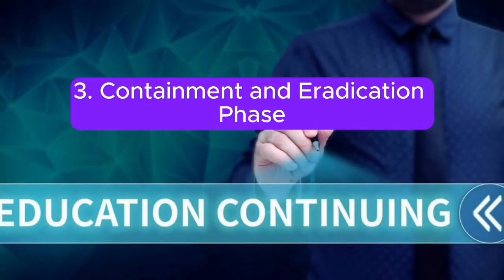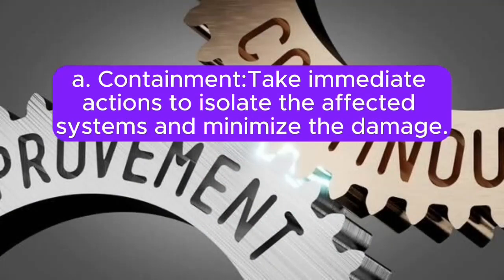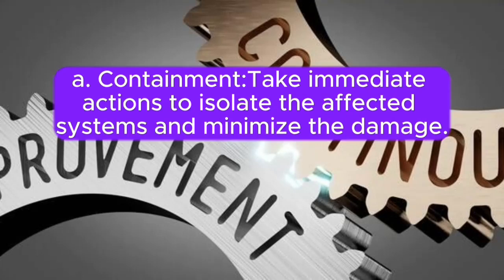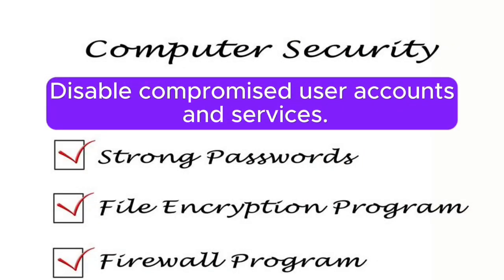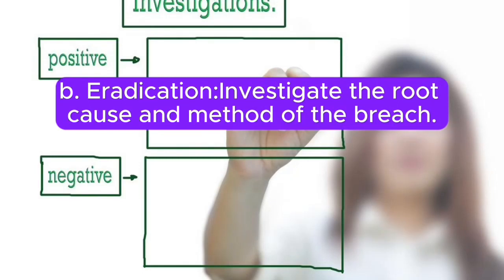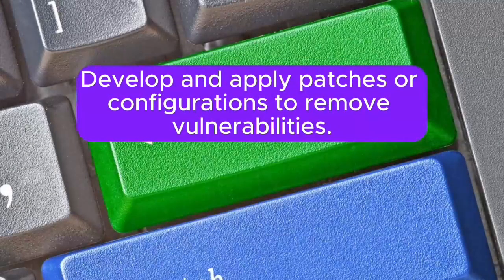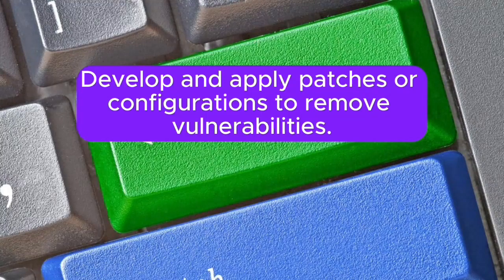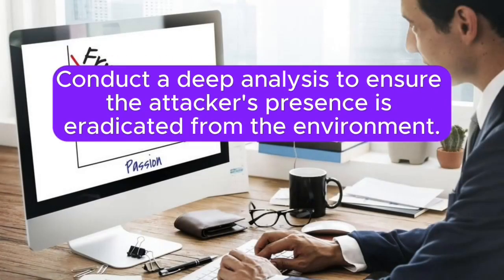3. Containment and eradication phase. A. Containment: Take immediate actions to isolate the affected systems and minimize the damage. Disable compromised user accounts and services. B. Eradication: Investigate the root cause and method of the breach. Develop and apply patches or configurations to remove vulnerabilities. Conduct a deep analysis to ensure the attacker's presence is eradicated from the environment.